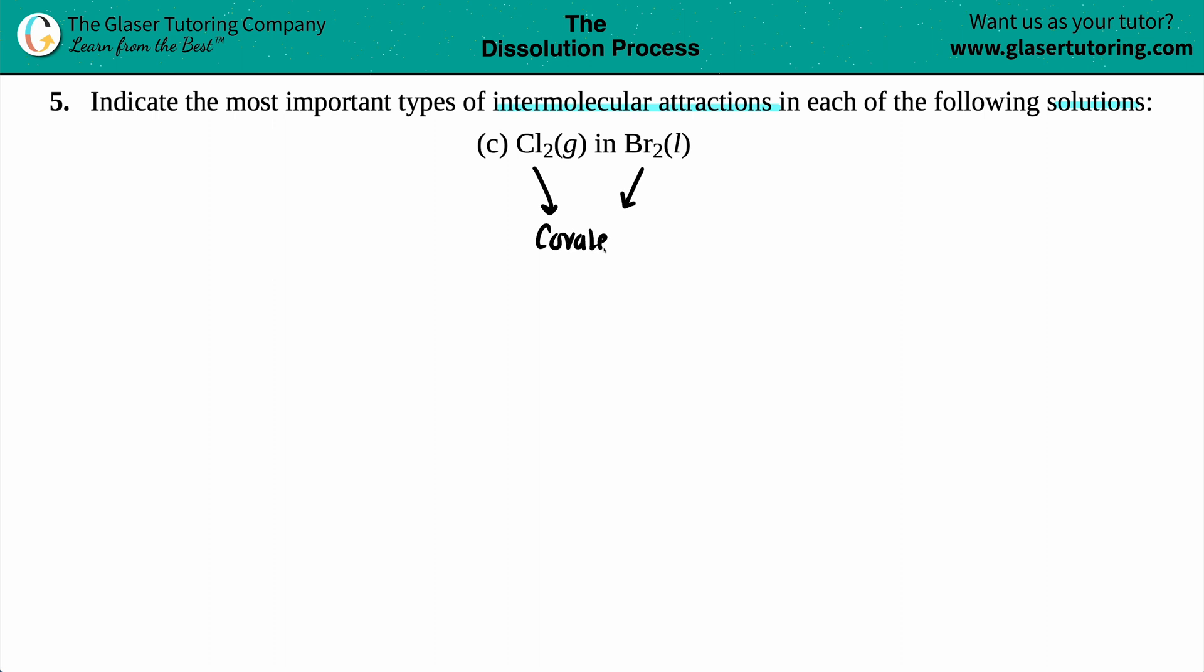With covalent molecules, the easiest way is to draw the Lewis structure to see what's going on. I'll quickly draw Cl2 and Br2. We've done tons of videos on this channel learning Lewis structures, so if you need to review, check the channel out. You can always pause the video.